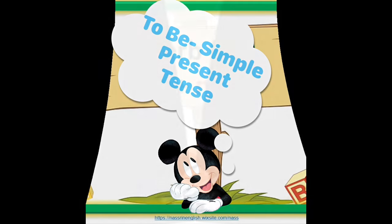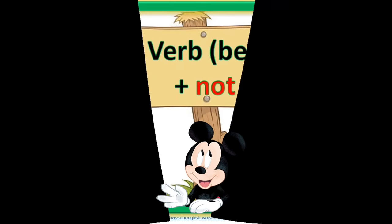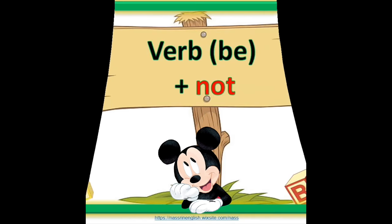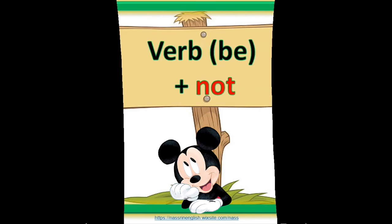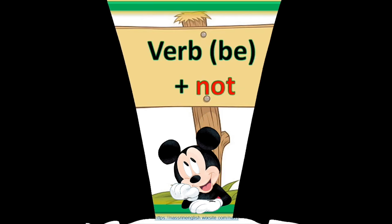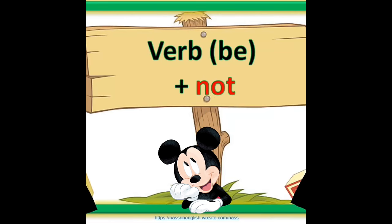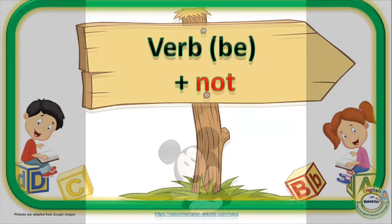Hello and welcome to today's lesson about using the negative short form with the verb to be. A negative short form is a contraction with the word not. Today we will look at some examples of when it's used with the simple present tense. Let's look at some examples together.